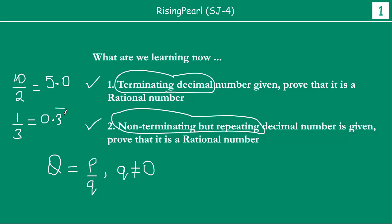Bar ka matlab hai ki this particular digit jiske oopar bar hai, that repeats indefinitely. So this decimal expansion will never terminate. These are only the two outcomes, dosto, that we have seen in our last webisode, jaha pae hum decimal expansions of rational numbers ke baare mein paat kar rahe tha.